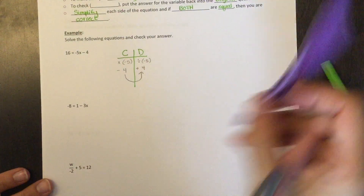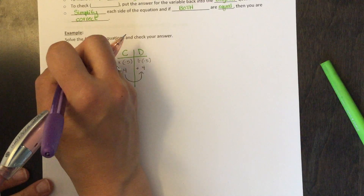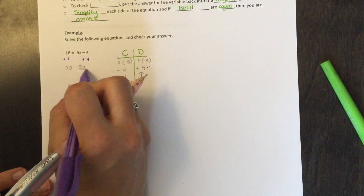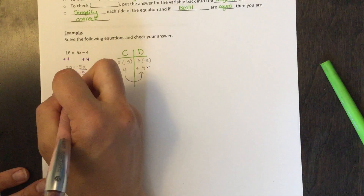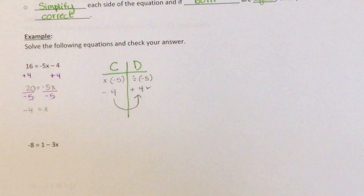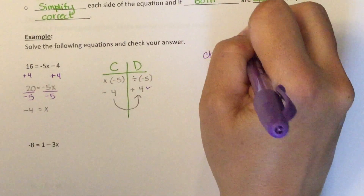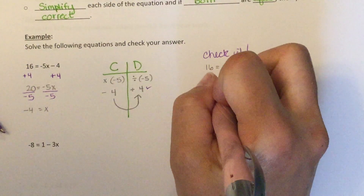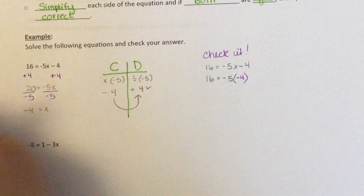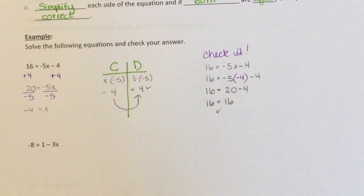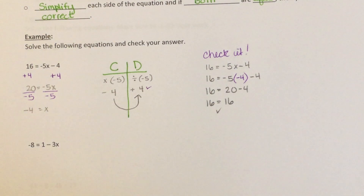So I'm going to add 4 to both sides and I get 20 equals minus 5x. Now I'm going to divide by minus 5 on the right and divide by minus 5 on the left, and I get x equals minus 4. Let's check our work: 16 equals minus 5 times minus 4 minus 4 — that's 16 equals 20 minus 4 — 16 equals 16. Right on! I'd like you to try the next two questions. I'll put the answers up — let me know how you did. Awesome job, way to go!